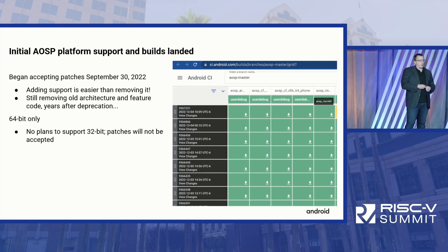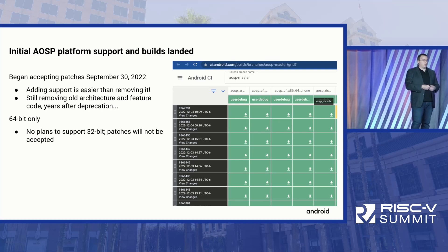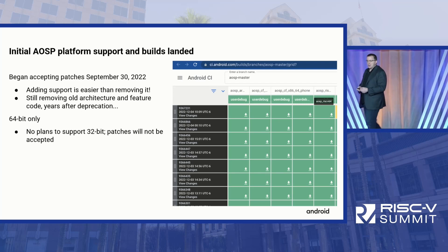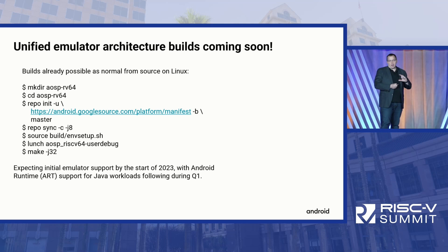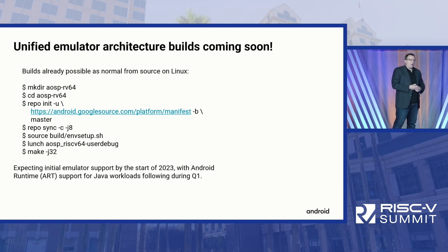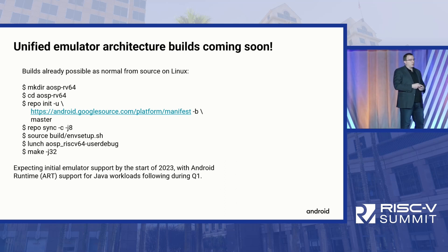We are only supporting 64-bit-only builds right now. Where we're at with Android, the increase in address space in order to address more memory, as well as some of the security features that require 64-bit pointers, are really critical to the ecosystem. We're also starting to see devices with longer lifespans, and it would be good if those didn't wrap over in a 32-bit integer in 2038. From a Linux box, you can go ahead and enlist right up against the tip of the tree and build locally. We're expecting to have full high-fidelity emulator support very early at the start of next year. And we'll have Android runtime support for all of the Java workloads during Q1, starting with the interpreter and building up through our just-in-time compiler.